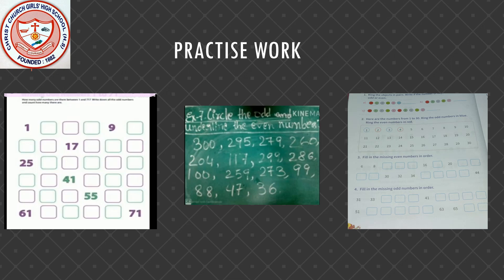The odd numbers from 1 to 71 are: 1, 3, 5, 7, 9, 11, 13, 15, 17, 19, 21, 23, 25, 27, 29, 31, 33, 35, 37, 39, 41, 43, 45, 47, 49, 51, 53, 55, 57, 59, 61, 63, 65, 67, 69, and 71.